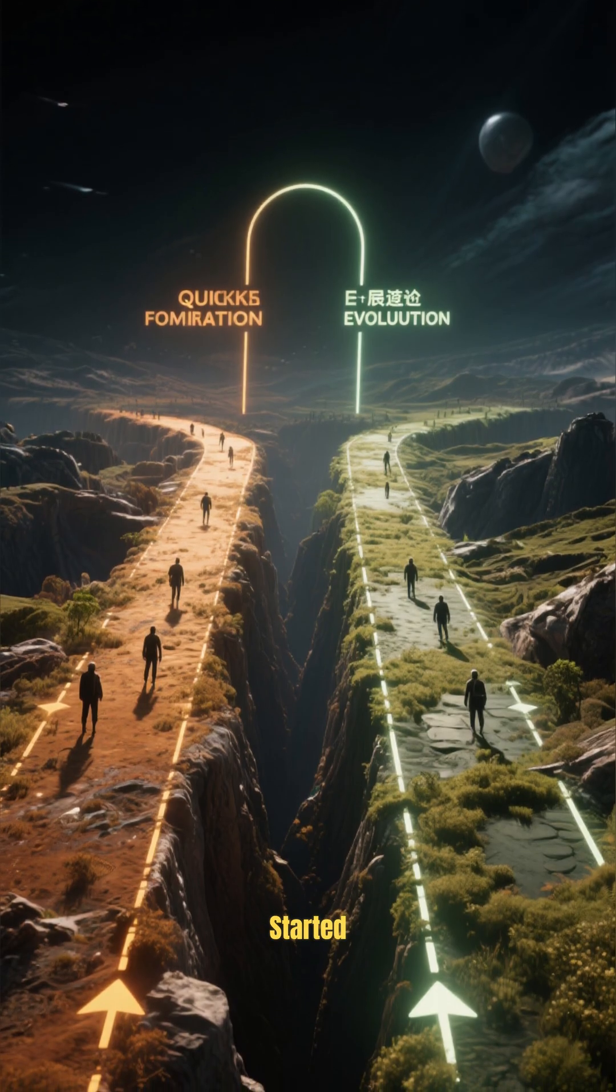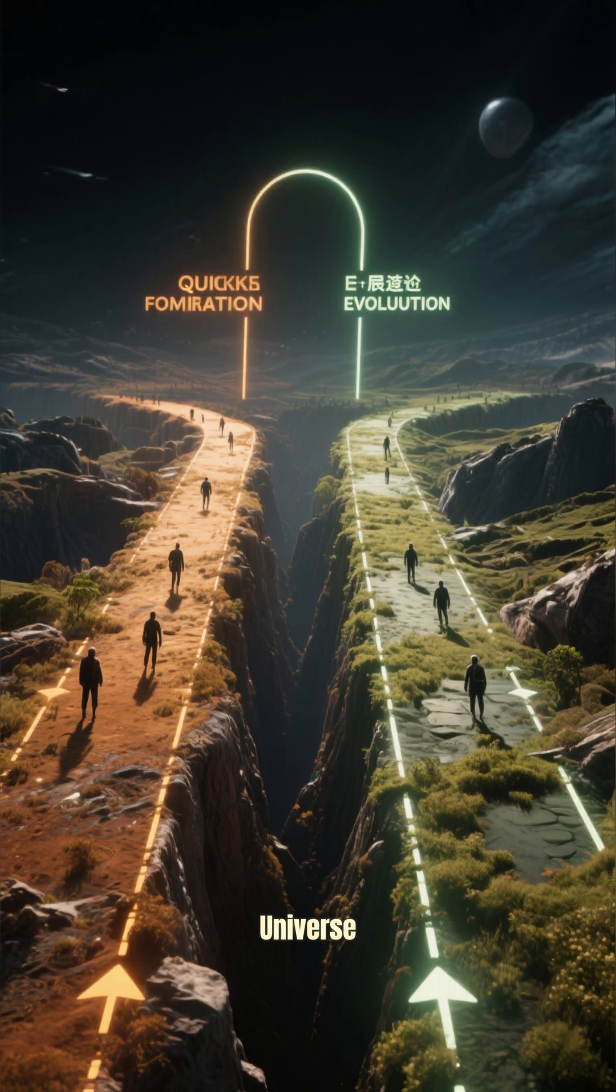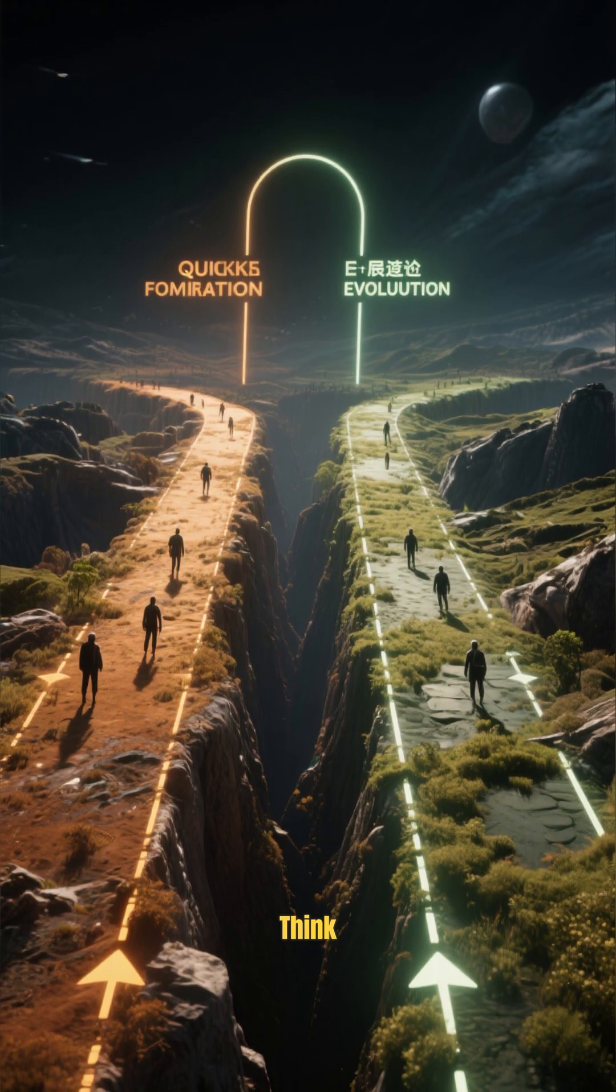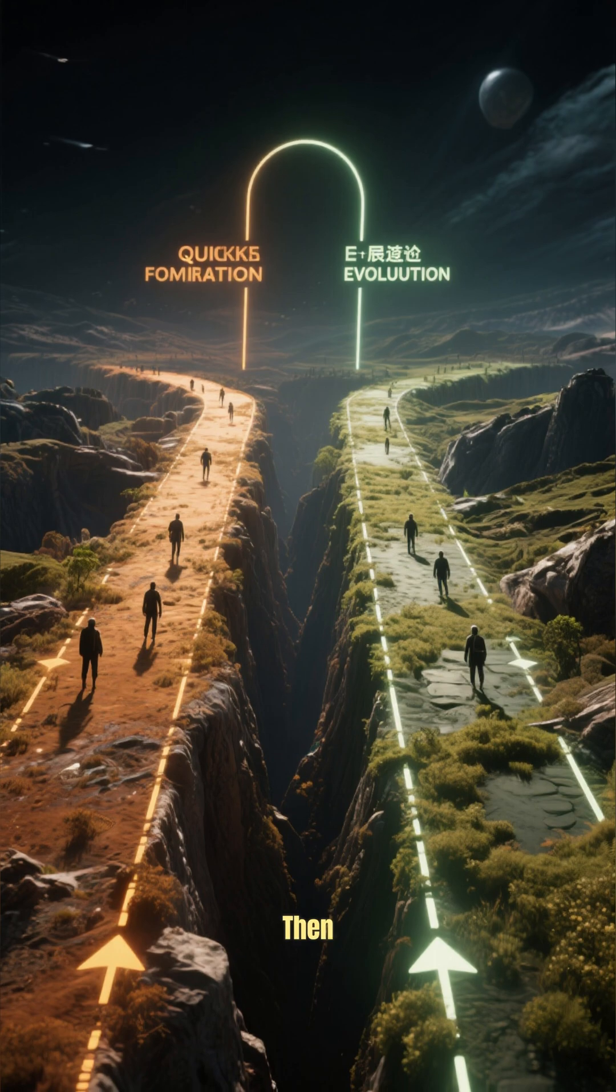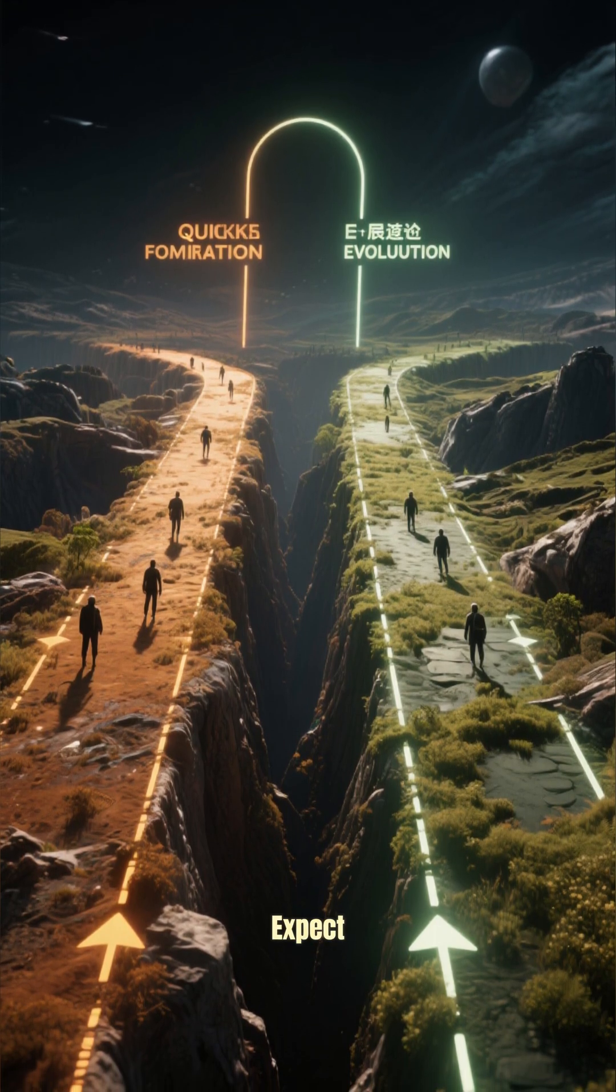This means that either they started out that way, which would mean that the universe formed faster than we think, or they've grown a lot since then, which would mean that they're evolving much faster than we expect.